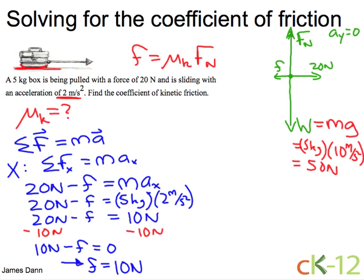Great. So now, if I take this formula down here, let's make a space for it right here. We know that mu K times the normal force, which is fifty Newtons, is equal to ten Newtons.